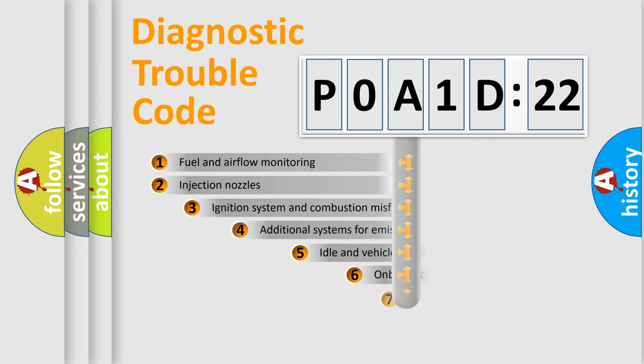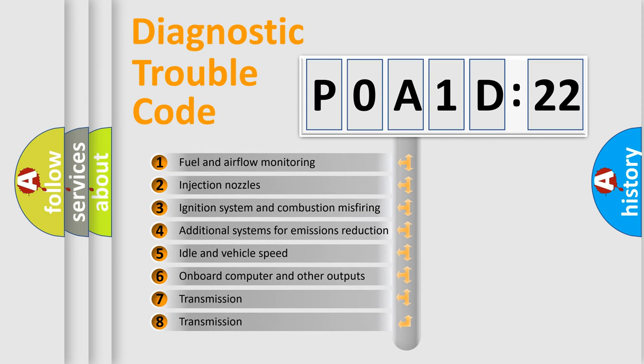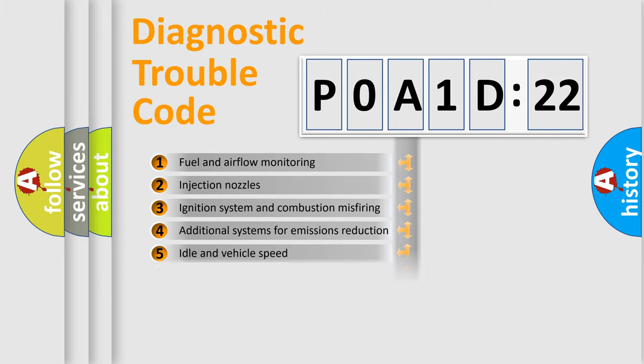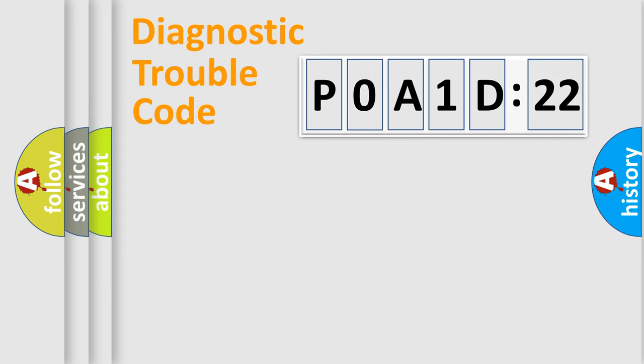The add-on to the error code serves to specify the status in more detail, for example, a short to the ground. Let's not forget that such a division is valid only if the other character code is expressed by the number zero.